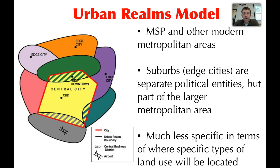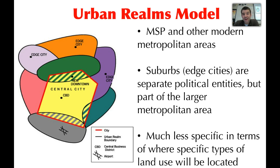The fourth model is the urban realms model. Minneapolis-St. Paul is an example of how this can be illustrated. We have a very core central business district in Minneapolis, and then we have edge cities. Shoreview is a good example — it has basic government buildings, a community center, retail shopping, grocery stores, gas stations, auto repair, and many services needed daily. However, it's very connected to the larger metropolitan area, living somewhat independently but within it.